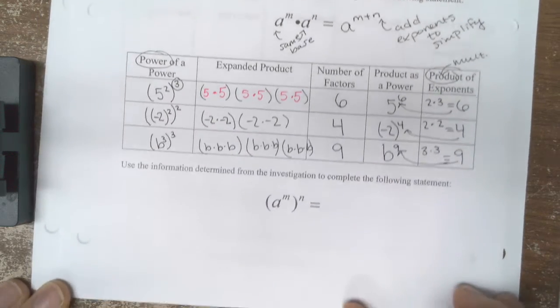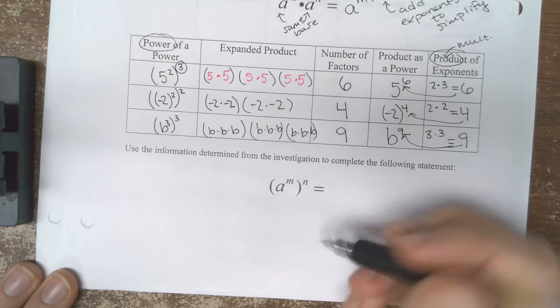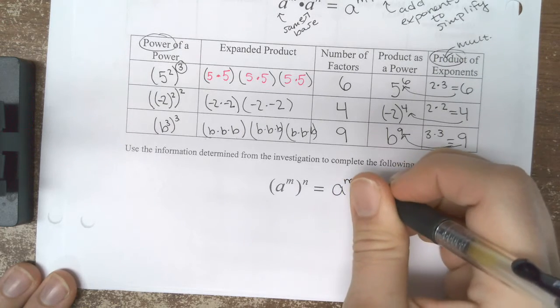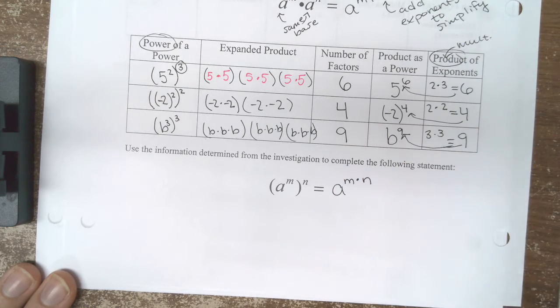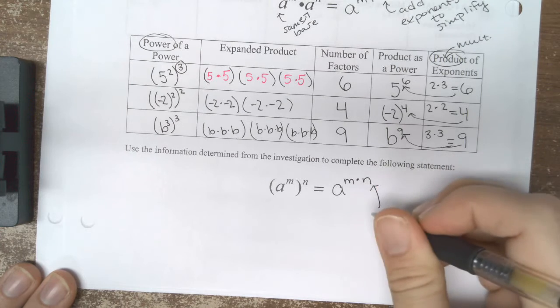So using that information, we can determine that if I have a power to a power, I can multiply my exponents to simplify.